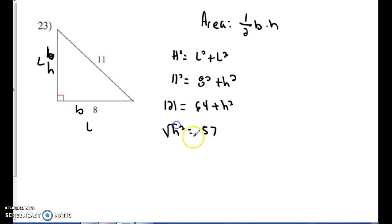So I got 121 minus 64 gets me 57. And then I'm just going to square root both sides to find out what the height is. And in this case, it is 7.5, approximately. We'll just round to the nearest tenth, 7.5.